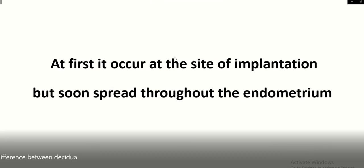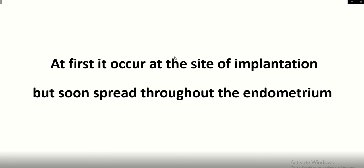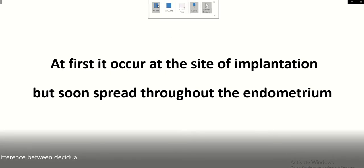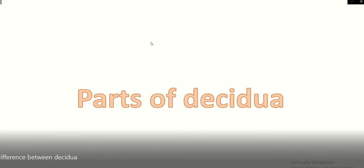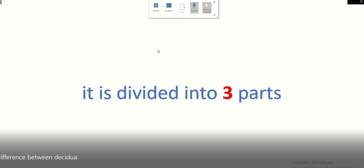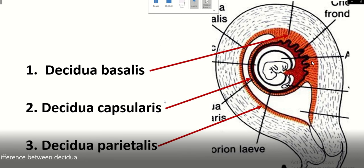At first the decidual reaction occurs at the site of implantation, but soon spreads throughout the endometrium. The decidua is divided into three parts: decidua basalis, decidua parietalis, and decidua capsularis.